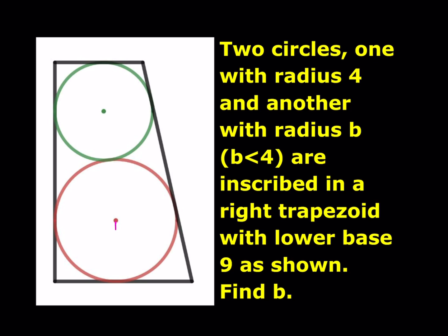We can start by marking the radii. This is 4 and this is b. I'll connect the centers, which is going to help. That's b and 4. We can make another perpendicular, and that's also going to be 4. So these are perpendiculars and we get a little square there — this is 4 and this is 4. Now, since the lower base of the trapezoid is 9, this piece is 5.